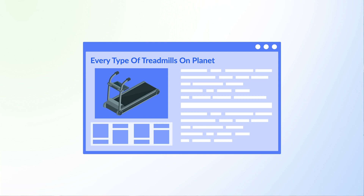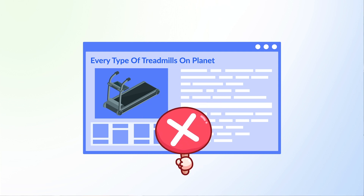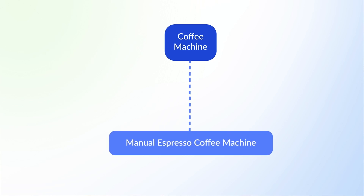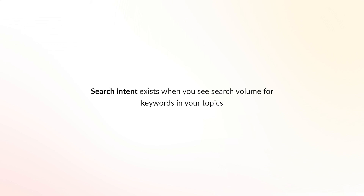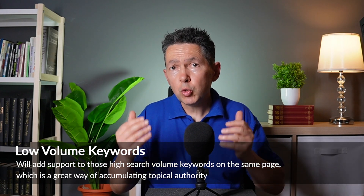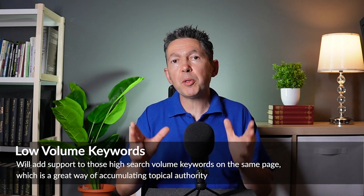Another option is to cluster keywords by search intent. Being an authority on a topic does not equal traffic if your topics don't align with the user's search intent. For example, a website with information on every type of treadmill is not a good resource for somebody searching with intent to buy a treadmill. Each topic can cover different pieces of content for different search intents — for instance, 'manual espresso coffee machine' is transactional, 'the best 10 coffee machines' is a comparison, and 'espresso making tips' is informational. If a keyword cluster contains high search volume keywords, the low search volume keywords will add support to those on the same page, accumulating topical authority.